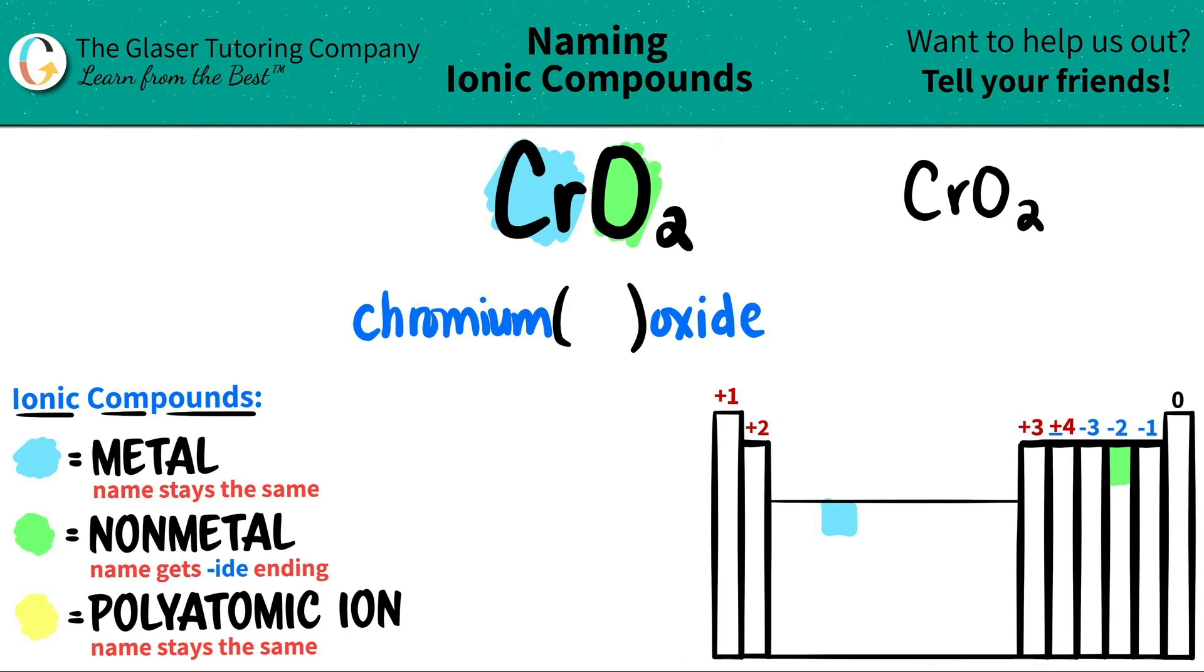We're going to take the subscripts and crisscross them back up to find out what the charges are. There was one chromium and two oxygen. This one crisscrossed up telling me that oxygen is a negative one and non-metals gain electrons. They become negative. And then the two crisscrosses up to the chromium telling me that that was a plus two.